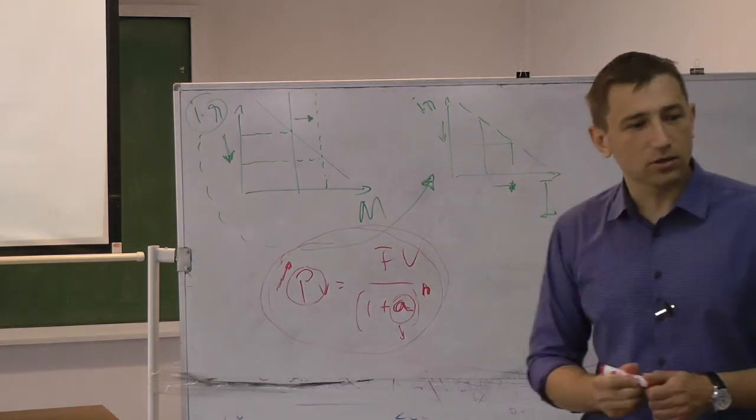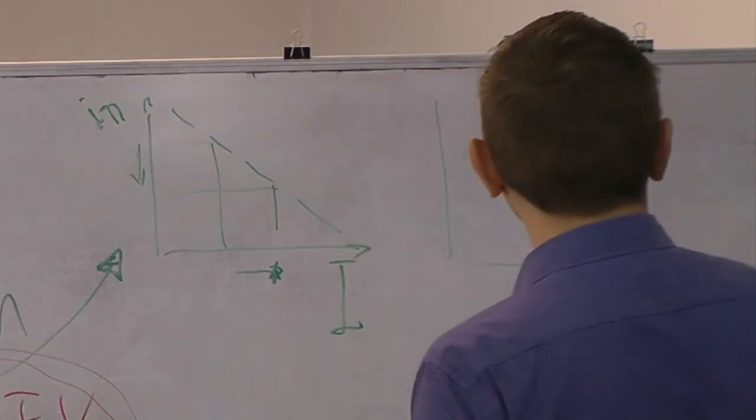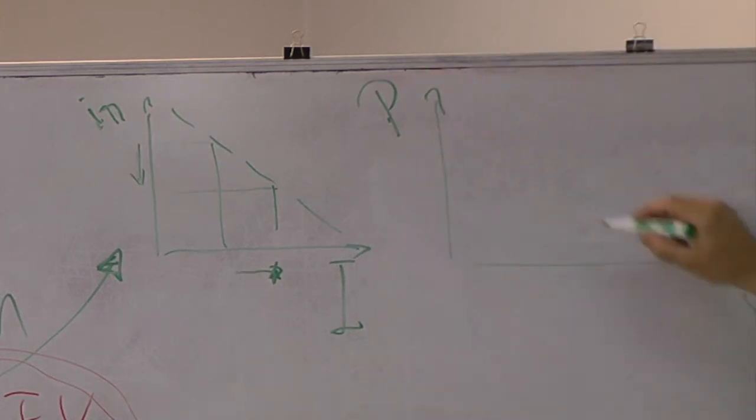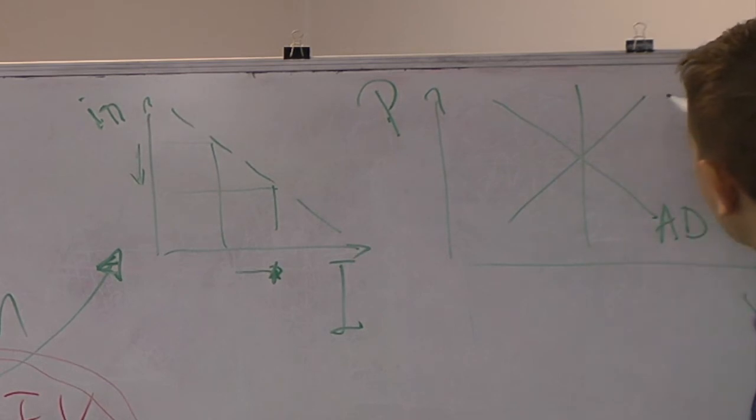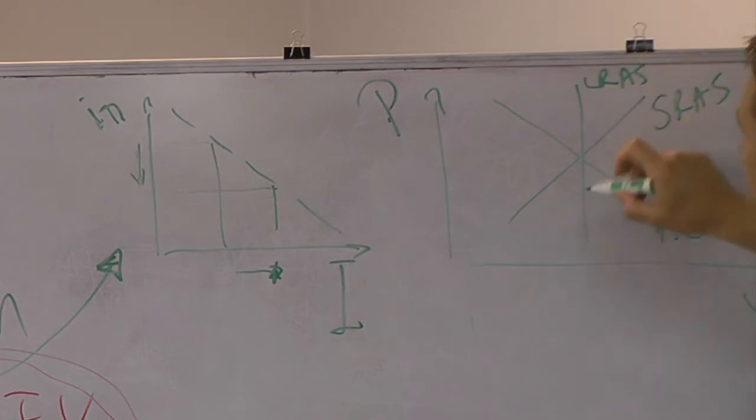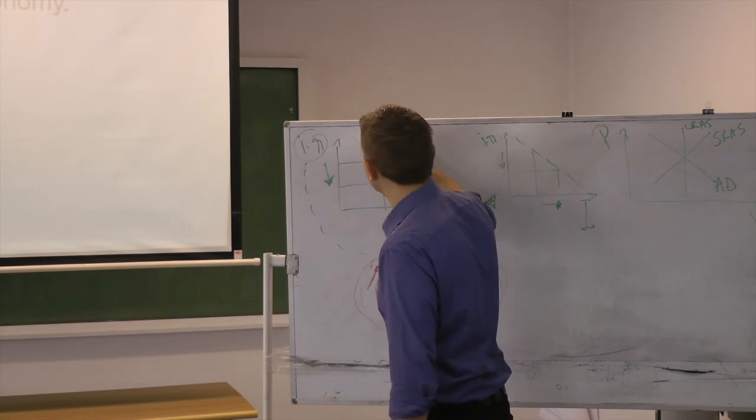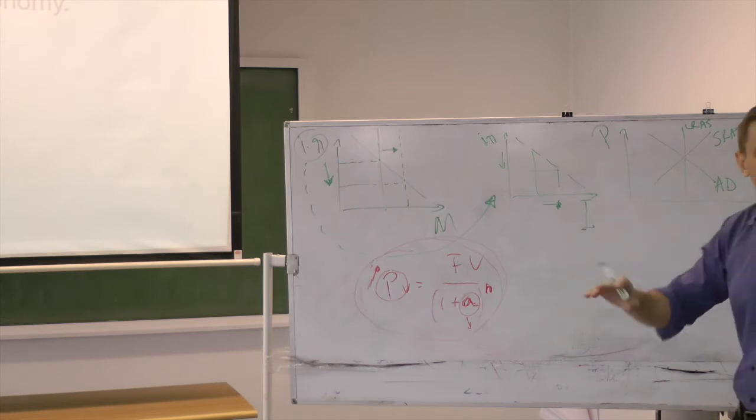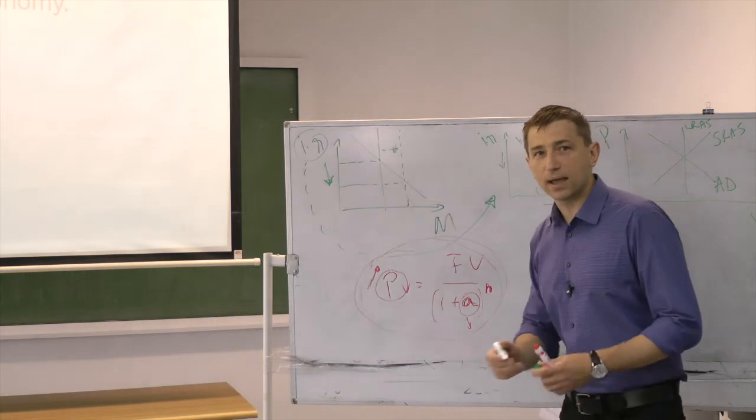And this will now go into my aggregate demand, aggregate supply model, where I have here inflation. I have here output. Aggregate demand, short run aggregate supply, and long run aggregate supply. What will change here based on what the central bank did here? So you see the chain is like a chain reaction. It's like a domino game. The chain started here when the central bank...